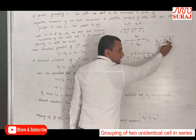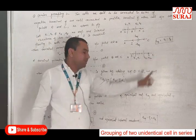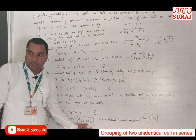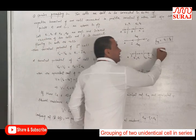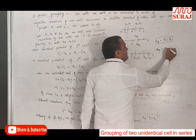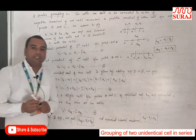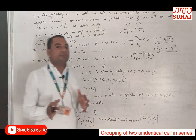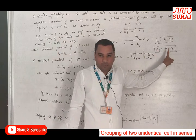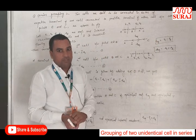Here, E1 minus E2 is the net or equivalent EMF of the two cells. But the internal resistance of two cells is still written as R1 plus R2, because resistance of a cell or any instrument is never negative — it is always positive. So, the net equivalent resistance is always R1 plus R2, and the net equivalent EMF is E1 minus E2. Thanks. Have a nice day.